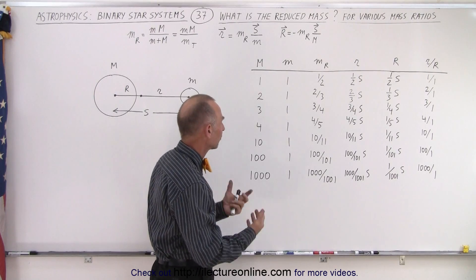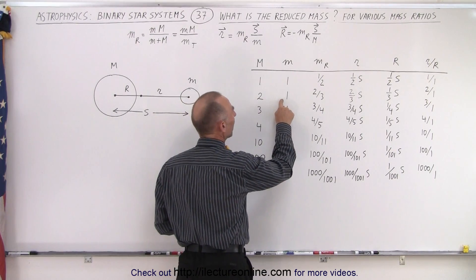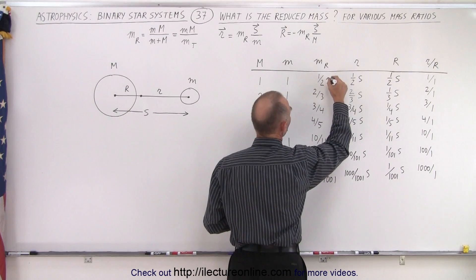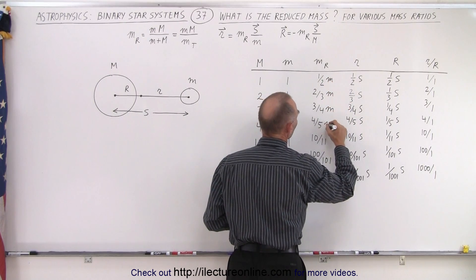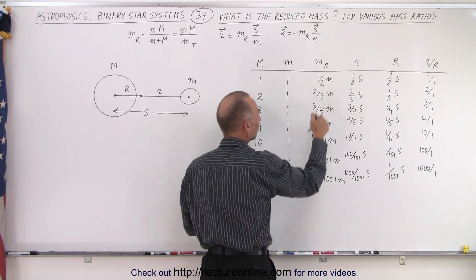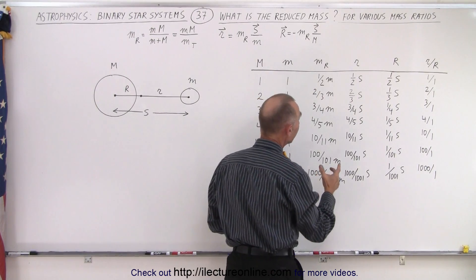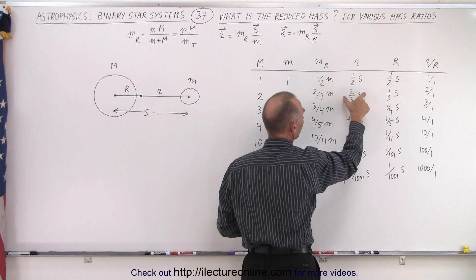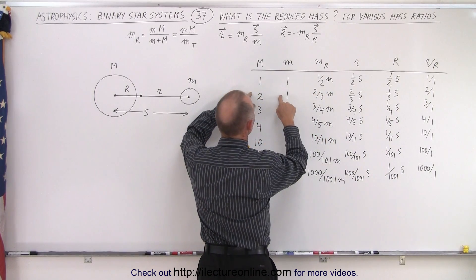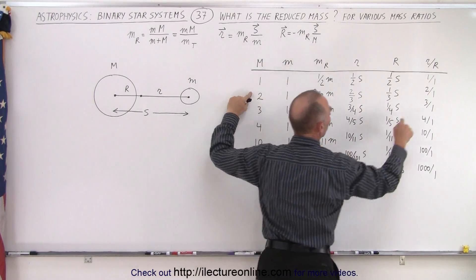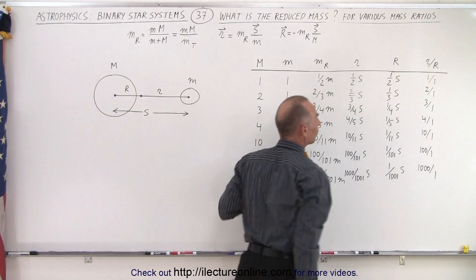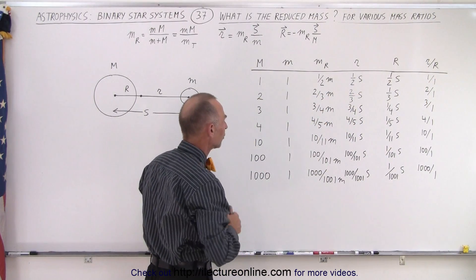But then things begin to change when we have a different ratio. When the large mass is twice the small mass, the reduced mass becomes two-thirds M — I should actually put an M behind it, because otherwise it doesn't make sense. So the reduced mass is two-thirds the mass of the small object, and we can see that the radius of the small object is two-thirds the total distance, where the radius of the large object is one-third, giving a ratio of two-to-one. So if we have a two-to-one ratio of the large mass to the small mass, we have a two-to-one ratio of the radius of the orbit of the small object to the radius of the large object, and you can see that that ratio continues all the way down.